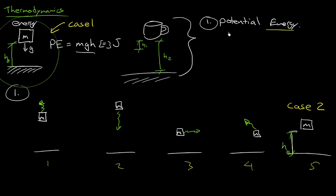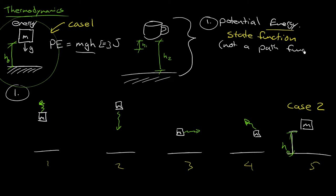We have a name for this: the potential energy is a state function — a function only of the state, independent of the path taken. Like climbing a mountain straight up or zigzagging: the height you reach at the end is the same. By contrast, work — the amount of energy it took to go through all those steps — is a path function. It took more work than simply raising the mass straight to that height, but the final potential energy state is independent of how you got there.